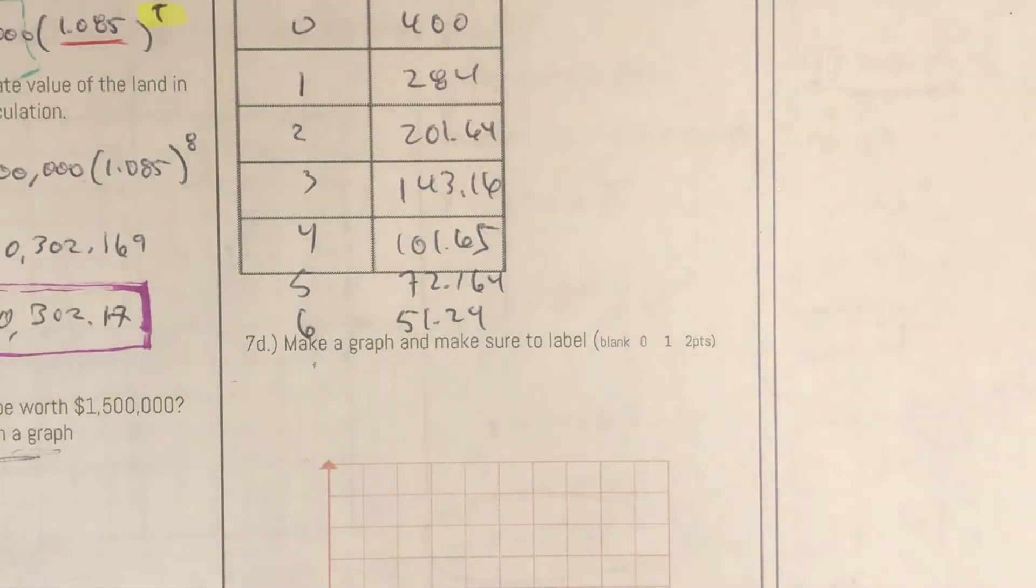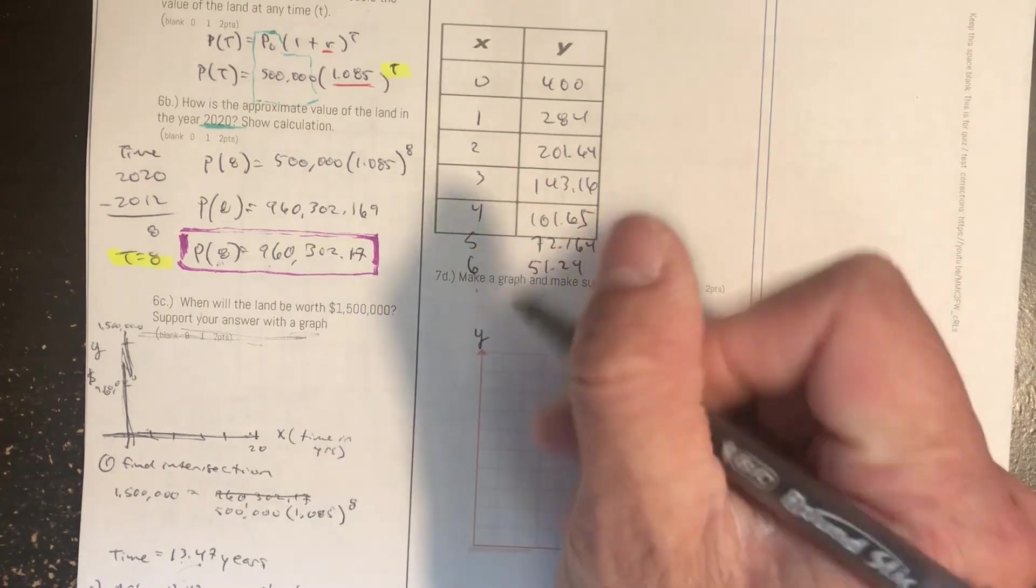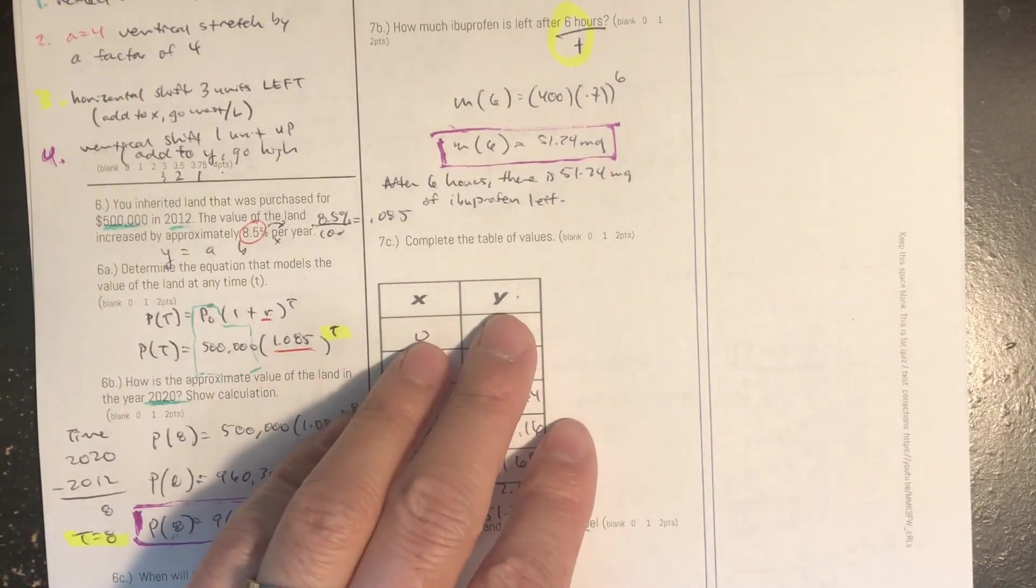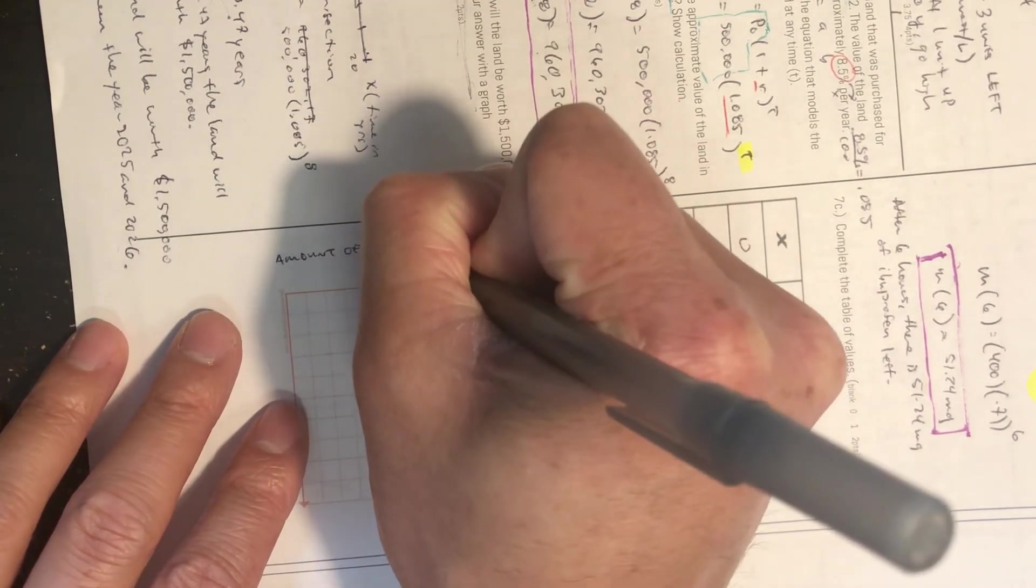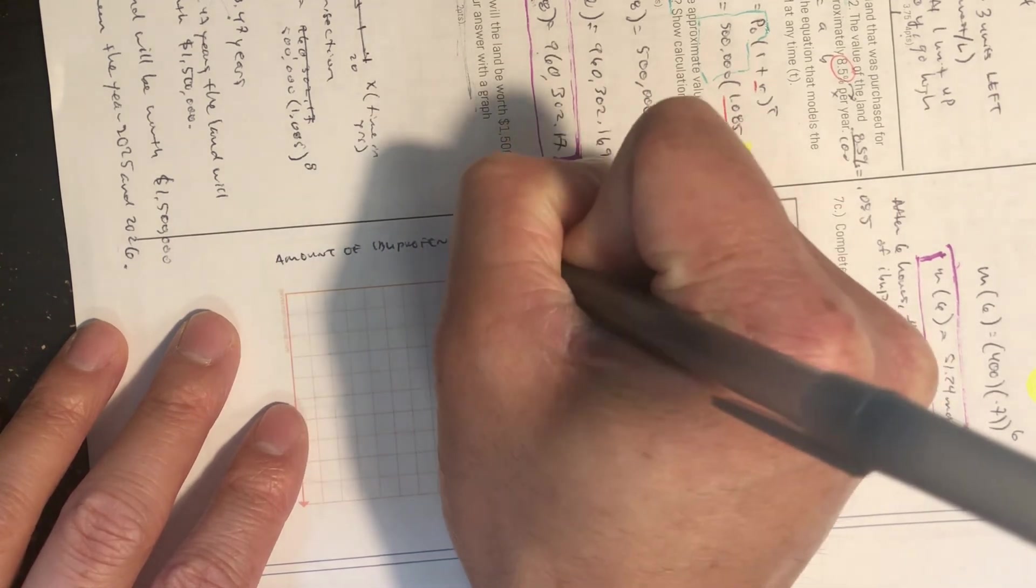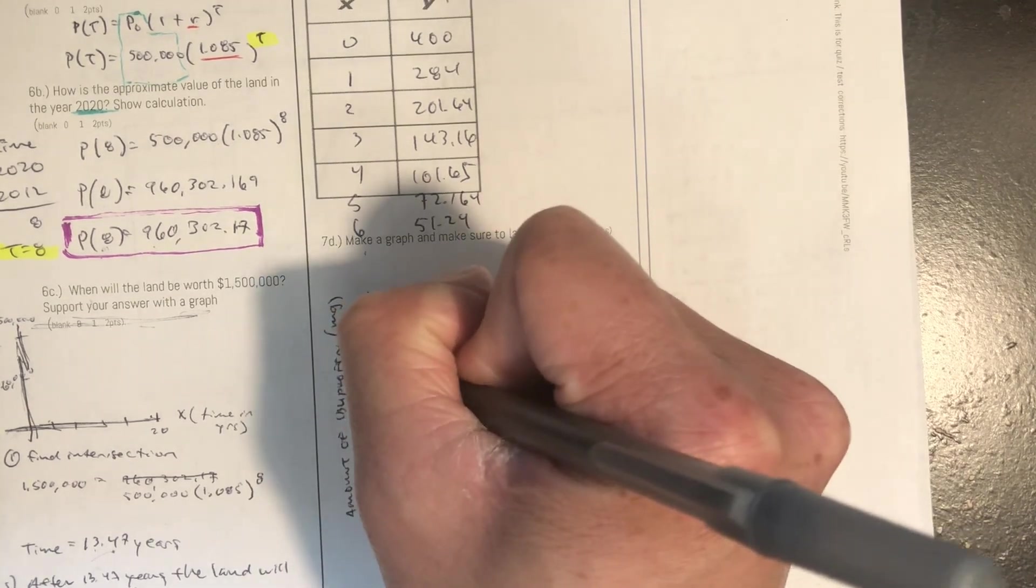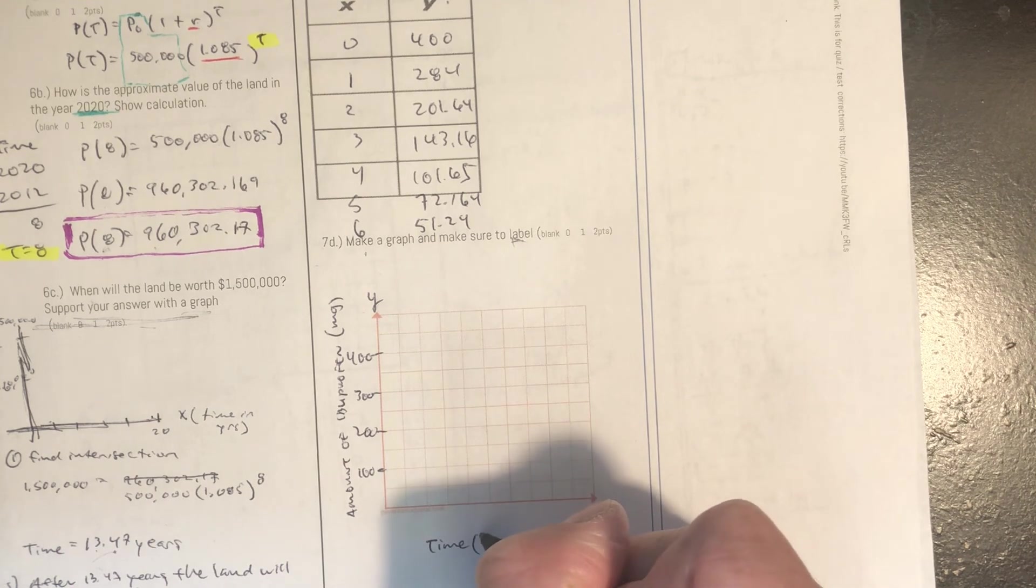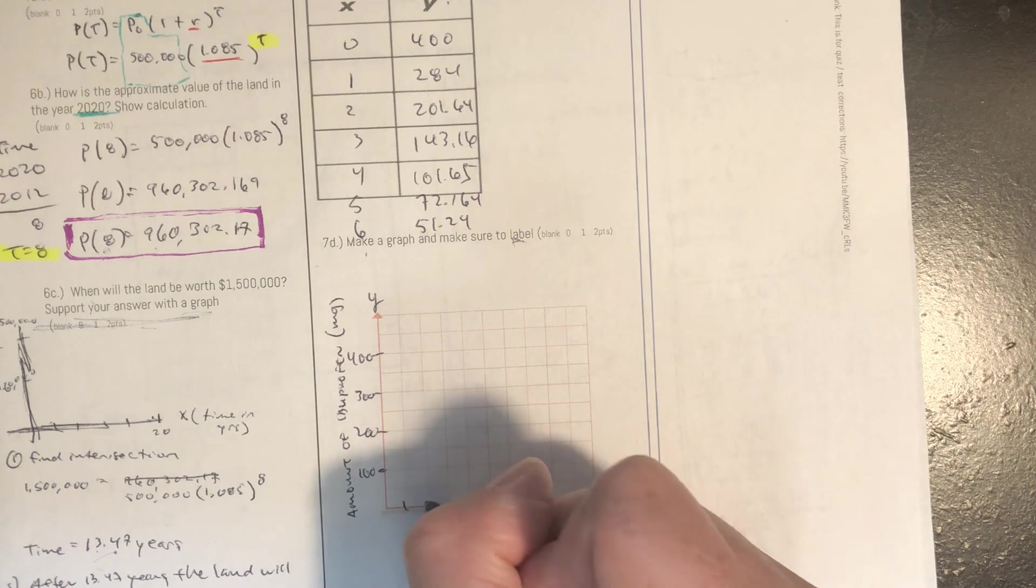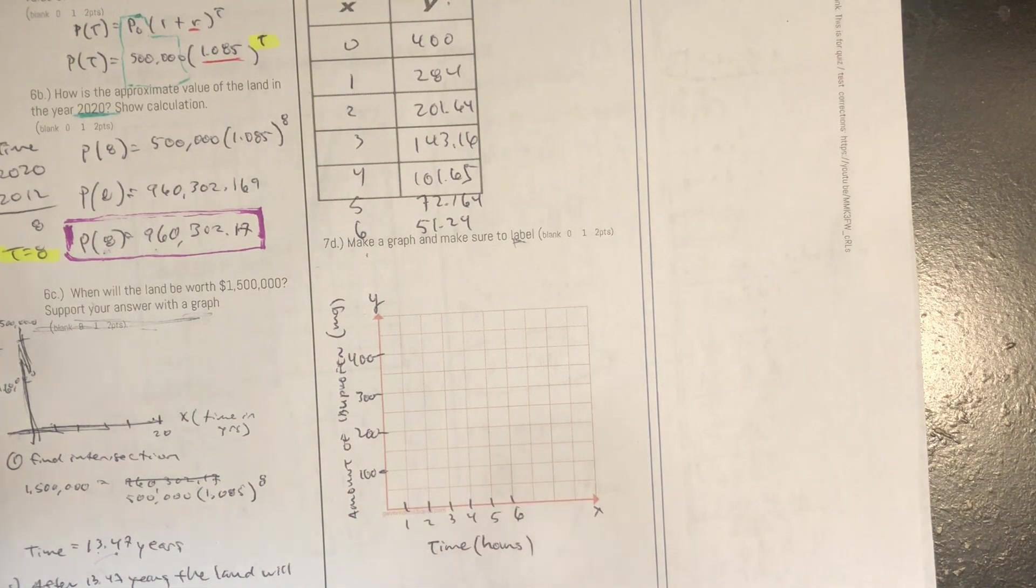Then let's make a graph. And make sure to label it. So this is my y-axis. And the y's are essentially your amount of milligrams. Let's write that. Amount of ibuprofen measured in milligrams. And I'm going to start off by, let's see if we can count this. 100, 200, 300, and 400. And then my x-axis is time. And its unit of measurement is hours. So we can do something like 1, 2, 3, 4, 5, 6.